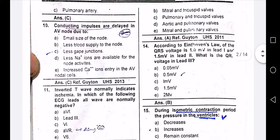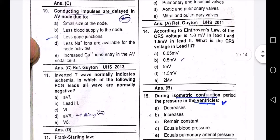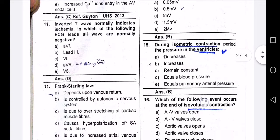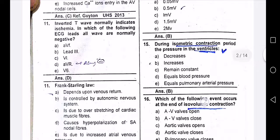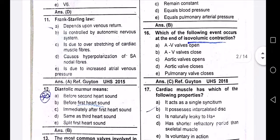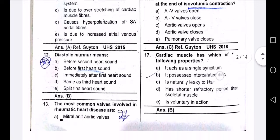According to Einthoven's law, the QRS voltage is 1 millivolt in lead 1 and 1.5 millivolts in lead 2 — what is the QRS voltage in lead 3? During the isometric contraction period, the pressure in the ventricle is increased. The event that occurs at the end of isovolumetric contraction is the aortic valve opening.